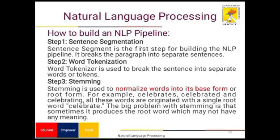The steps discussed apply to how to build an NLP pipeline. Step one is sentence segmentation — the first step for building the NLP pipeline — which breaks paragraphs into separate sentences. Step two is word tokenization: a word tokenizer is used to break the sentence into separate words or tokens. Step three is stemming, used to normalize words into their base or root form. For example, 'celebrate,' 'celebrated,' and 'celebrating' are all organized with the single root word 'celebrate.' The problem with stemming is that sometimes it produces a root form which may not have any meaning.